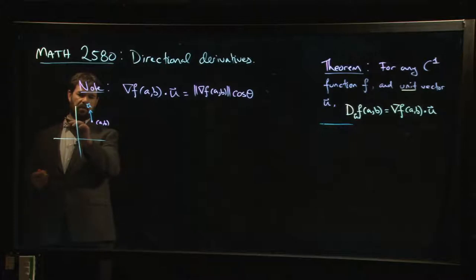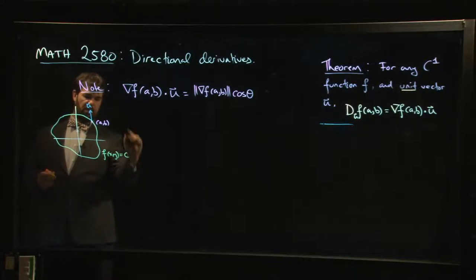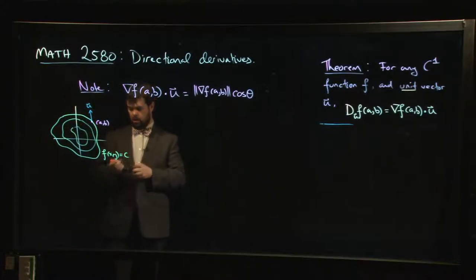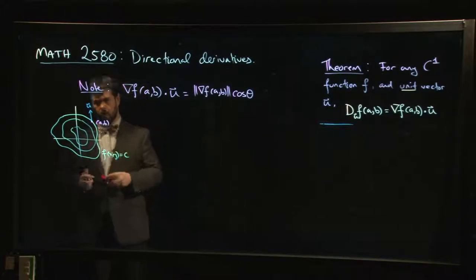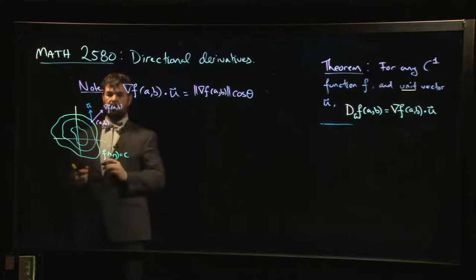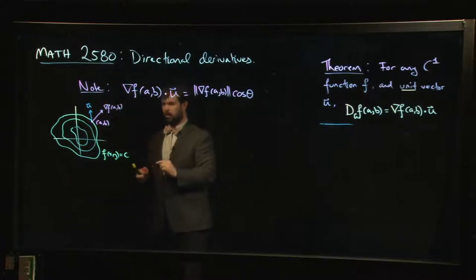So the way you want to think about this is you've got a coordinate system, you're at some point AB, and you want to move in the direction of some vector u and you want to know how your function is going to change when you head off in that direction. Well, the way you maybe should think about it is that through that point I have a level curve for my function. Maybe it looks something like this.